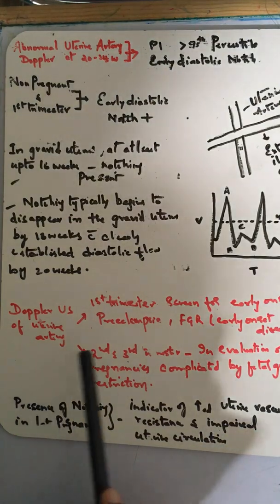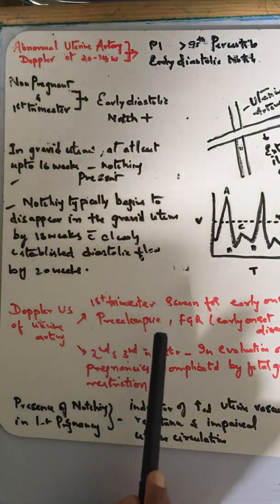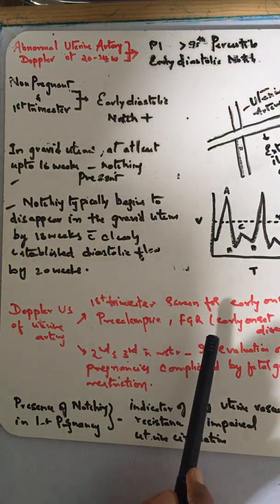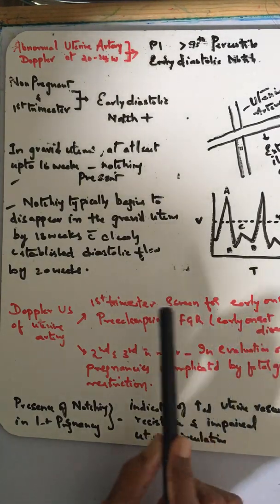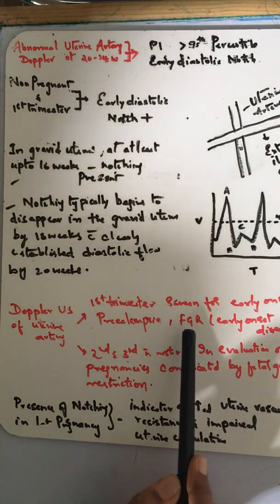When should you do the uterine artery Doppler? When the patient comes early, between 11 and 13 plus 6 weeks in the first trimester, we do it to screen for early onset preeclampsia and early onset fetal growth restriction.